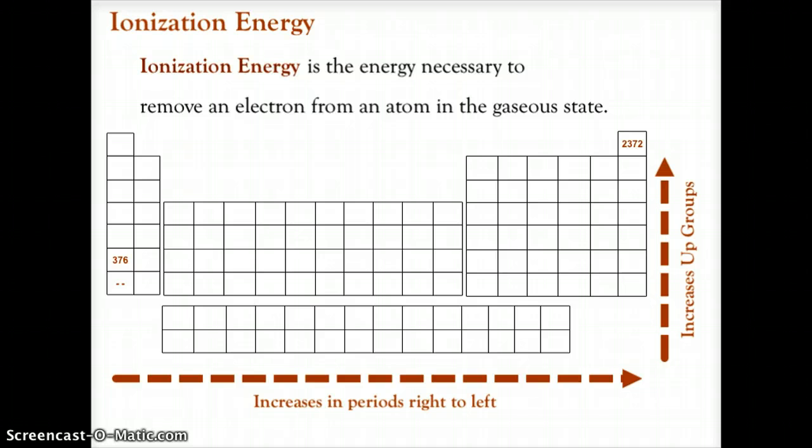So the ionization energy actually follows the same trend as electronegativity. It is going to increase as we go across periods left to right. So it increases in periods left to right and it increases moving up the groups. So francium would have the lowest, actually francium doesn't have an ionization energy, but lower left corner of the periodic table, lowest ionization energy, highest ionization energy upper right of the periodic table moving across periods left to right. It increases moving up groups, it increases.